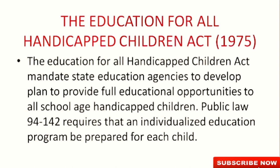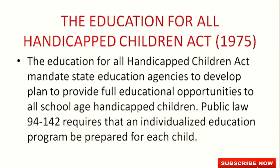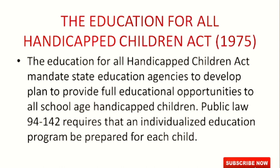Next we shall discuss the Education for All Handicapped Children Act 1975. This act mandates state education agencies to develop plans to provide full educational opportunities to all school-age handicapped children. Public Law 94-142 requires that an individualized education program be prepared for each child. This has been incorporated in a very significant way in the Sarva Shiksha Abhiyan and DPEP.